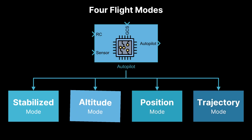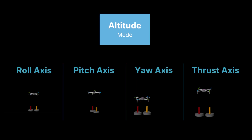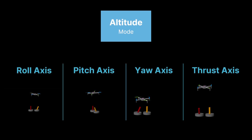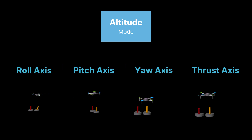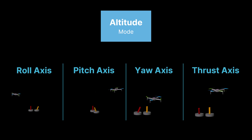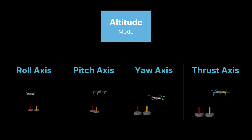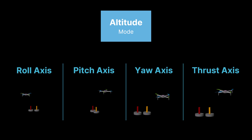Let's move on to altitude mode. Altitude mode, also known as altitude hold mode, the autopilot maintains a constant altitude based on barometer or other altitude sensors, while the operator controls roll, pitch, and yaw. This mode reduces the operator's workload by automatically adjusting throttle to keep altitude stable, which is commonly used for smooth flying.